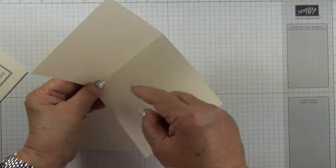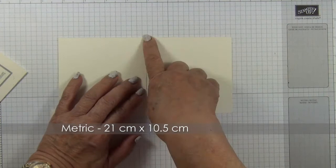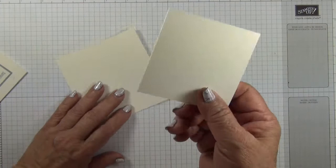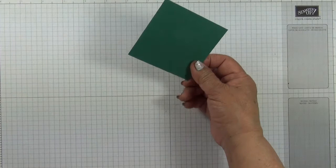Then you simply score at four and one eighth and fold it in half. Now the metric measurement will then be 21 centimeters by 10.5 centimeters. Score at 10.5 and fold it in half. So these three by three inch squares are 7.6 by 7.6 centimeters.